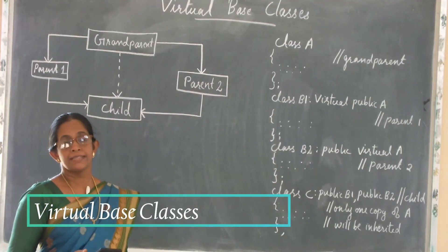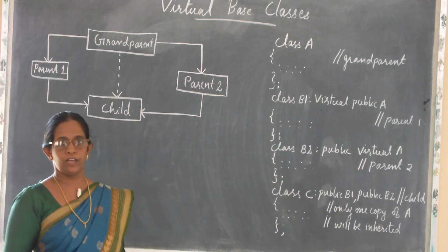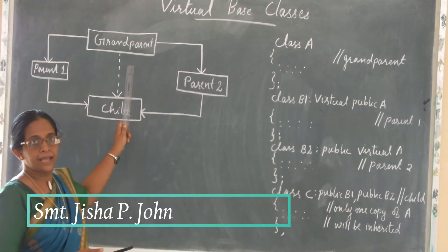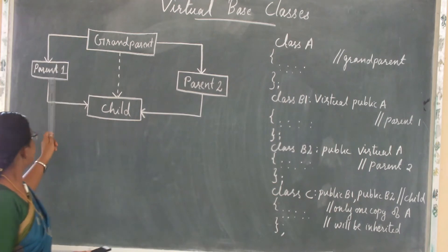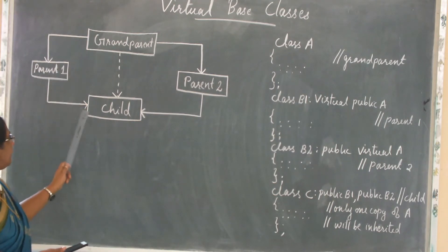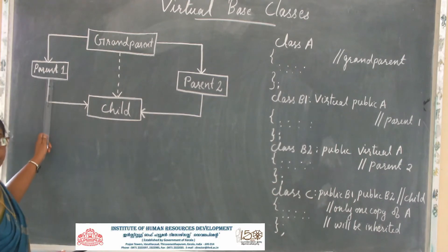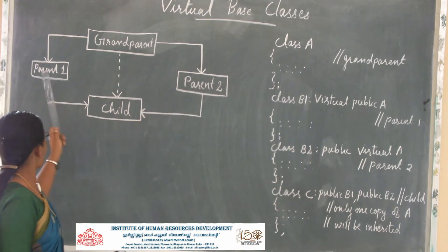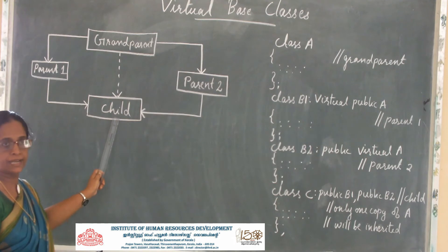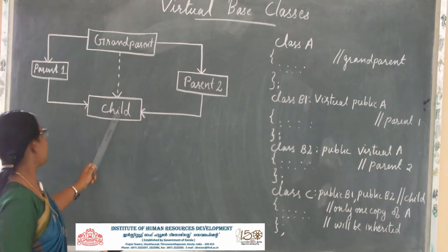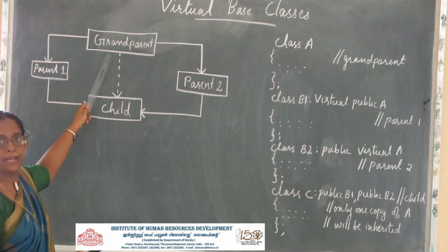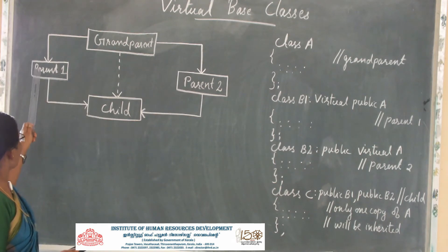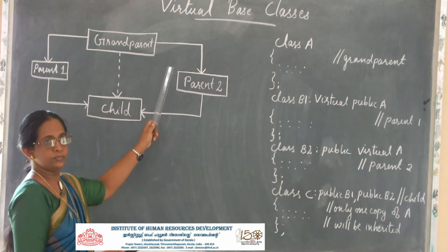Virtual base classes in multiple inheritance can cause problems. For example, if grandparent is a base class, and parent one and parent two are both derived from grandparent, then a child class derived from both parent one and parent two can access the protected and public members of grandparent through two ways: one through parent one, and another through parent two.